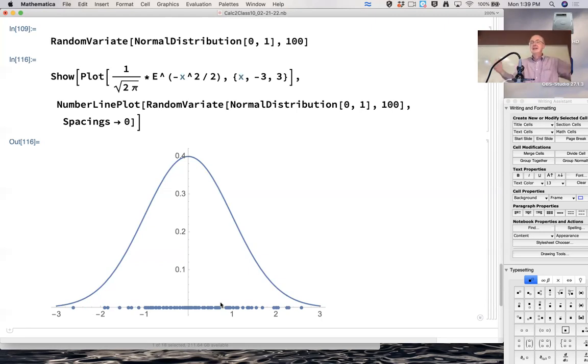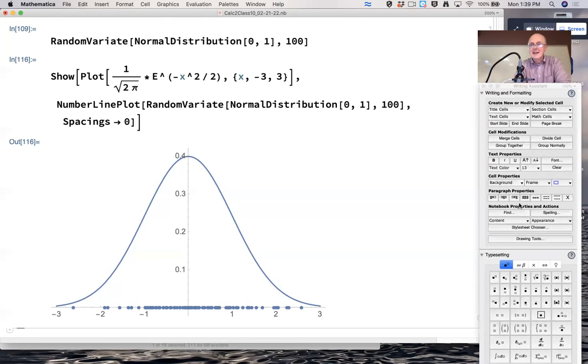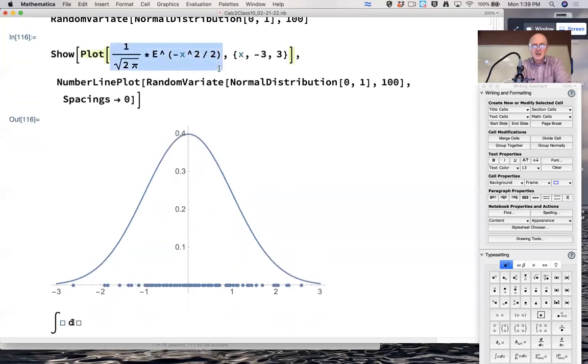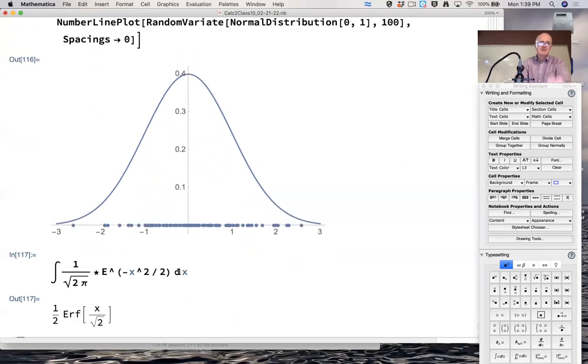Numerical integration is also necessary because you can't integrate this function symbolically without introducing a new function called the error function. ERF. Sound like a dog there. ERF. Error function. It's a new function you've never heard of before. Why do they call it the error function? Because it's related to errors in experiments. That's why.